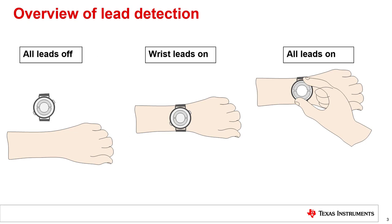Let us consider a wrist-borne wearable device that has electrodes for ECG signal acquisition. Here we consider a case where two of the electrodes on the bottom face of the watch make contact with the left wrist of the user when the watch is worn. We call these the LA, or left arm, and RLD, or right leg drive electrodes. Whenever the ECG signal needs to be acquired, the user touches an electrode on the top face of the watch. We refer to this as the RA, or right arm electrode.